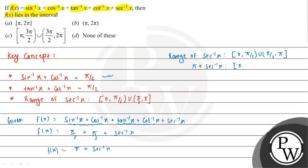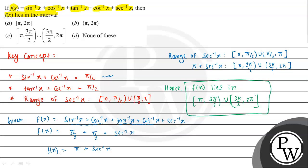Adding π to the range of sec inverse x: f(x) lies in π to 3π/2, union 3π/2 to 2π. So this is the final answer to the given question. Looking at the options, option C will be the correct choice. I hope you understood the solution. Best of luck, thank you.